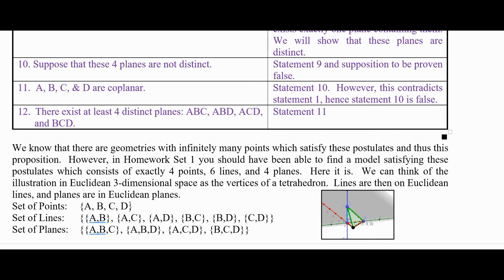The set of points is {A, B, C, D}. The set of lines consists of any pair of those points — six pairs: {A,B}, {A,C}, {A,D}, {B,C}, {B,D}, and {C,D}. So lines in this geometry have exactly two points.